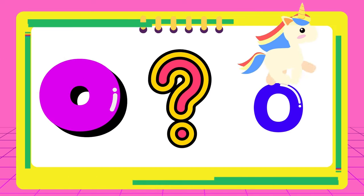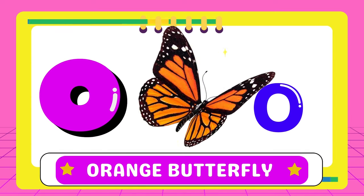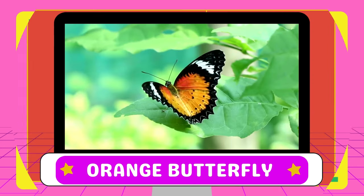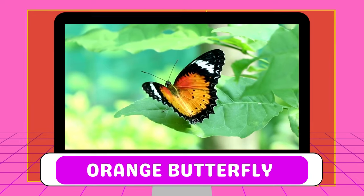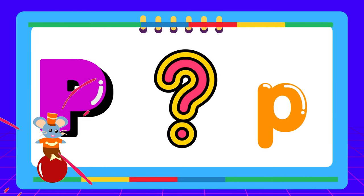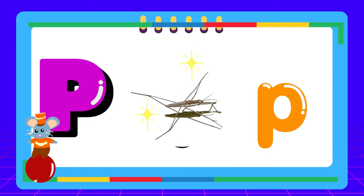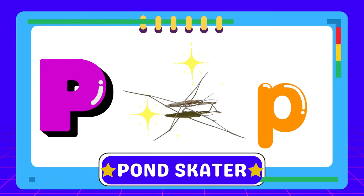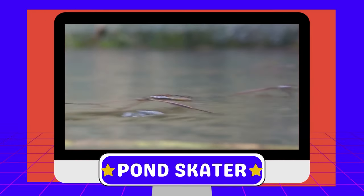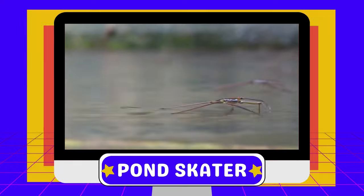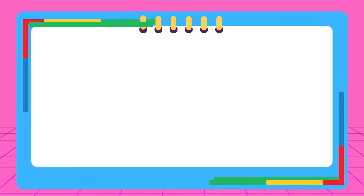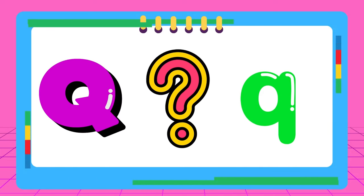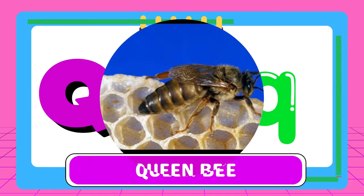O — O for orange butterfly. P — P for pond skater. Q — Q for queen bee.